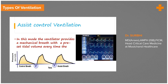In Assist Control Ventilation, unlike Controlled Mandatory Ventilation where even if the patient tried to trigger a breath the ventilator would not recognize it, in Assist Control when the patient tries to start a breath the ventilator recognizes it immediately and then delivers the breath totally as per either the set tidal volume or the set pressure. The patient can start the breath, the ventilator will recognize it, but after that the patient is totally supported by the ventilator — so patient comfort is greater.